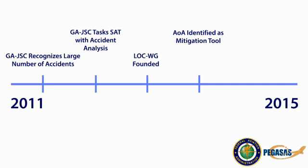Following these findings, the FAA streamlined the approval process for various angle of attack devices, deeming them minor modifications to the aircraft, which require less approval than major modifications.